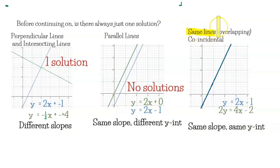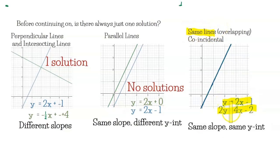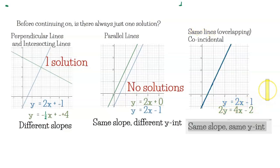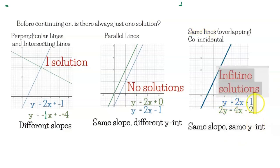And if they're the same line — for instance, if you divide everything by two on the bottom equation it looks like the top one — then it's the same slope and the same y-intercept, and there's an infinite number of solutions.